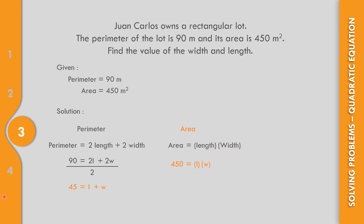We will use substitution. From the perimeter equation, L equals 45 minus W. We substitute this value of L into the area equation — that is equation 2.